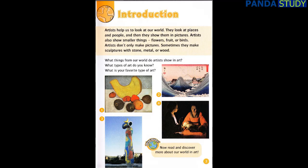Artists help us to look at our world. They look at places and people, and then they show them in pictures. Artists also show smaller things: flowers, fruit or birds. Artists don't only make pictures — sometimes they make sculptures with stone, metal or wood. What things from our world do artists show in art? What types of art do you know? What is your favourite type of art?